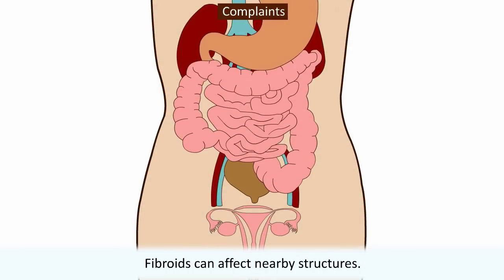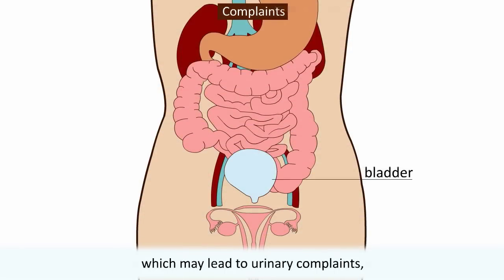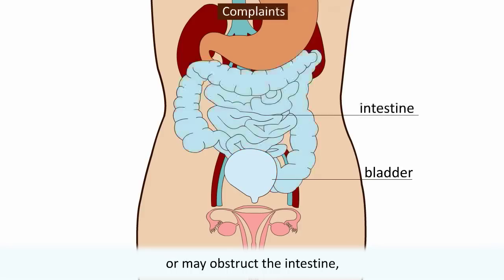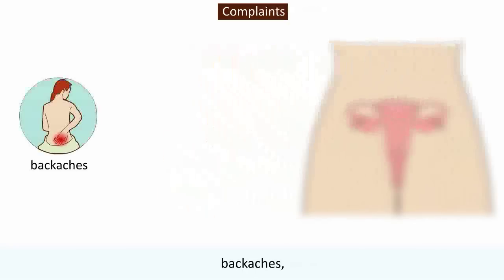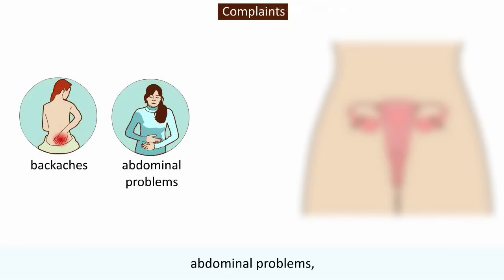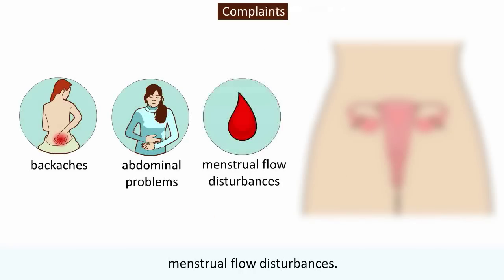Fibroids can affect nearby structures. They can cause compression of the bladder, which may lead to urinary complaints, or may obstruct the intestine, which may result in constipation. Other complaints can be back aches, abdominal problems, and menstrual flow disturbances.